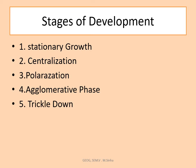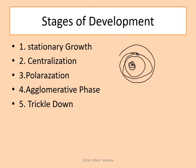There are various stages of the growth center model to achieve development. The first is stationary growth — the initial stage where development is not very fast. Then comes centralization, where growth concentrates in a core or nucleus area. Then polarization, then agglomeration, and finally the spread or trickle-down of all facilities.